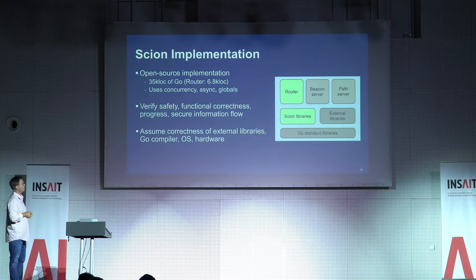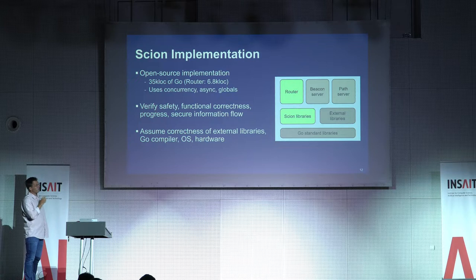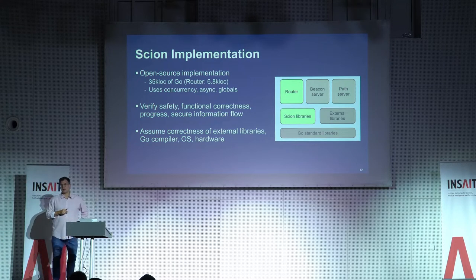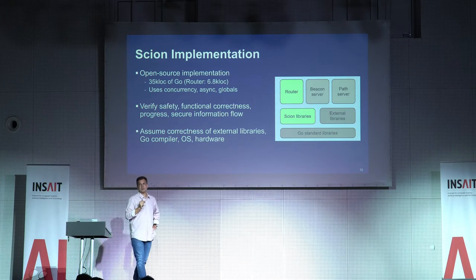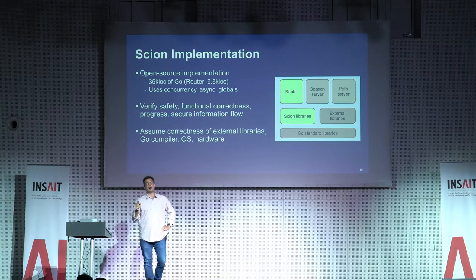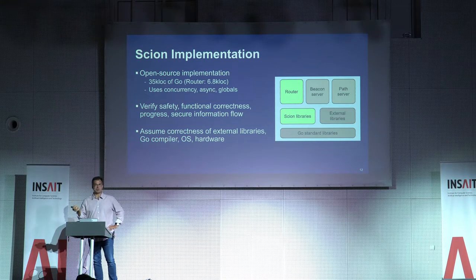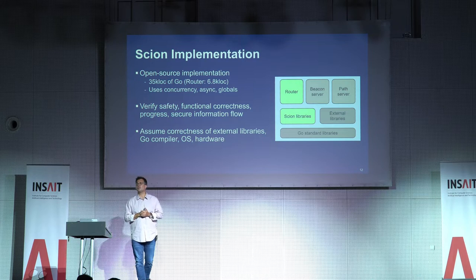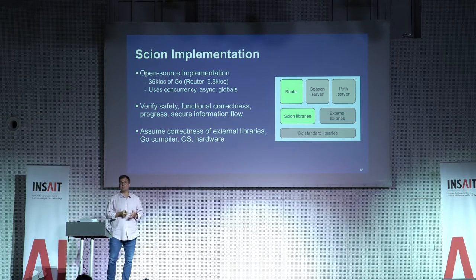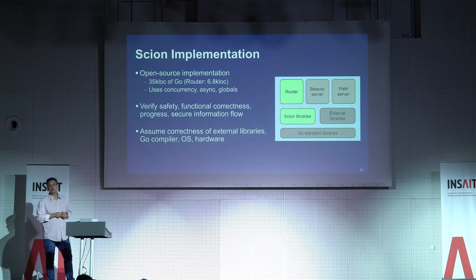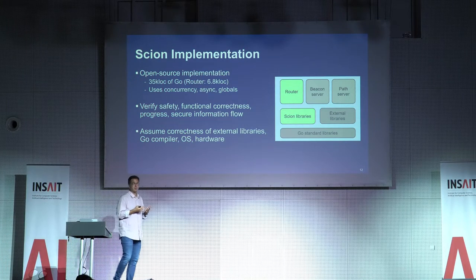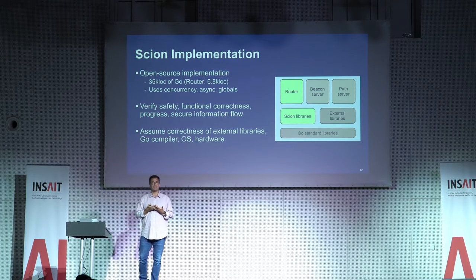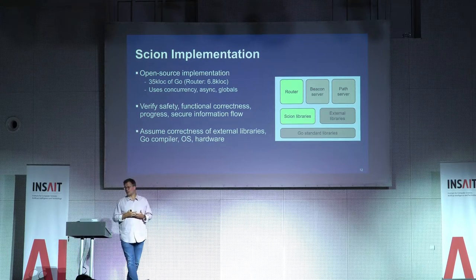We focus on the open-source implementation of SCION, roughly 35,000 lines of code, and currently on the router which runs under 7,000 lines. This is important because SCION's design keeps the router relatively simple — only because of that is verification even feasible. A Cisco router for today's internet runs roughly a million lines of C code, which is totally out of scope for current verification techniques. This illustrates a general observation: if you want projects to be fully verified, you have to design them with verification in mind, keeping them simple and well-structured enough for verification to succeed.